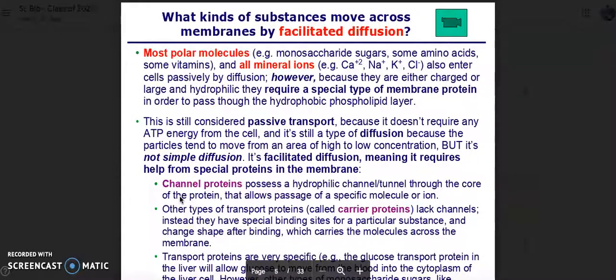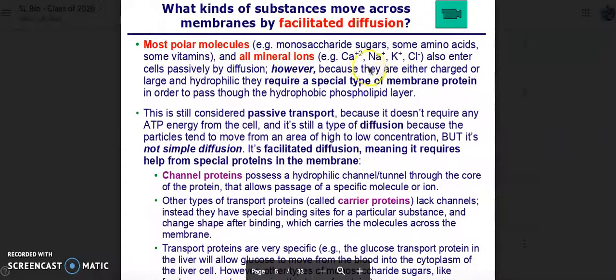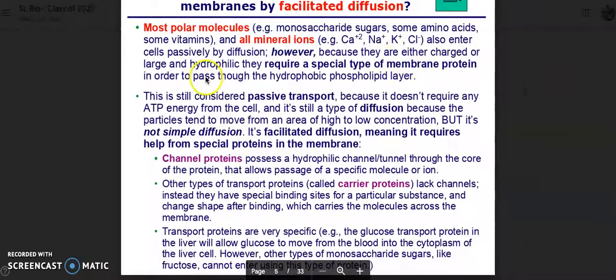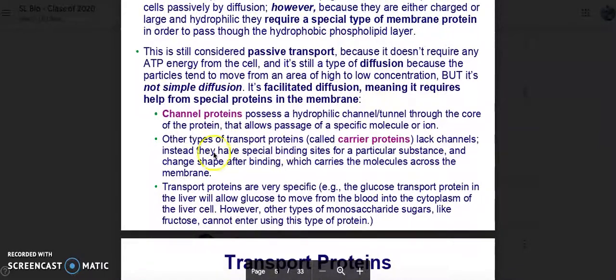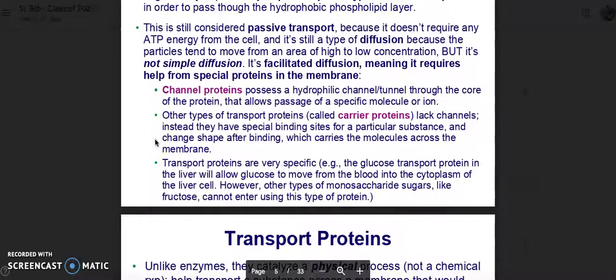What kinds of substances move across the membranes by facilitated diffusion? Most polar molecules, monosaccharide sugars, some amino acids, some vitamins, and all mineral ions also enter the cells passively by diffusion. However, because they are either charged or large and hydrophilic, they require a special type of membrane protein in order to pass through the hydrophobic phospholipid bilayer. This is still considered passive transport because it doesn't require any ATP from the cell, and it's still a type of diffusion because the particles tend to move from an area of high to low concentration.